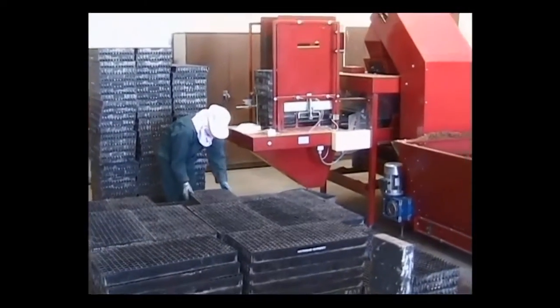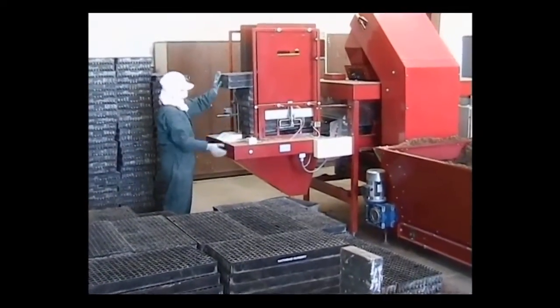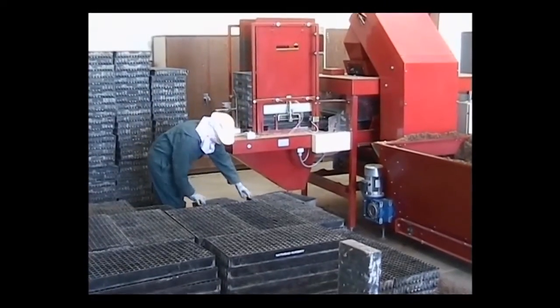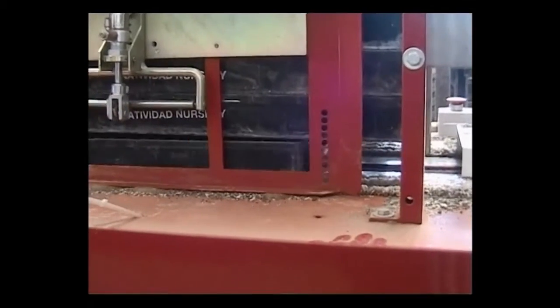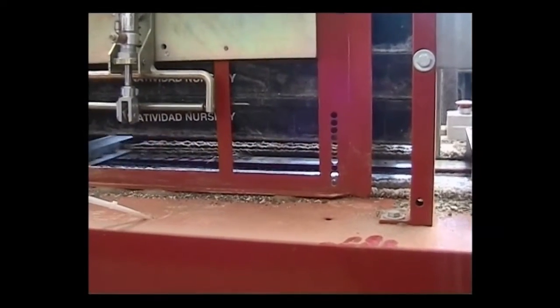Here you can see the automatic tray destacker working at approximately 1200 trays per hour but also you can see that the operator is quite comfortably keeping up which would not be possible on a manually fed line at this speed.